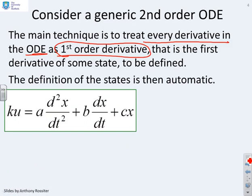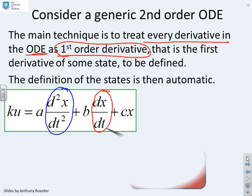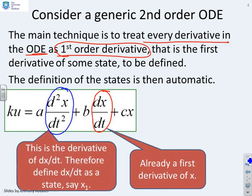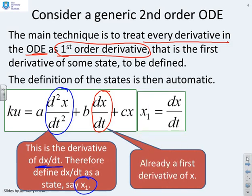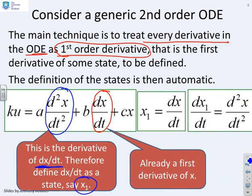Here's an example — you can see it's a second order ODE. Clearly, dx/dt is already a first order derivative. The challenge is to express the second order derivative d²x/dt² as a first order derivative. That's fairly straightforward: d²x/dt² is actually the derivative of dx/dt. So if I define dx/dt as a state x1, then d²x/dt² will be the derivative of x1. If I write x1 = dx/dt, then clearly dx1/dt = d²x/dt².